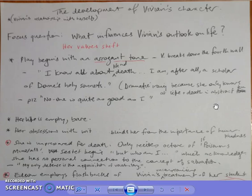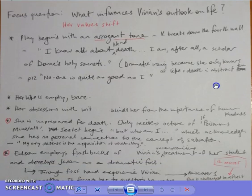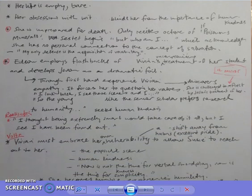The next point says that her life is empty and bare. Her name, Vivian Baring, has many meanings. There is a void in her life - her connection with emotion. She's bearing up to the pain. She's also lost her bearings. She's at a point where she doesn't truly understand how she fits in and what the purpose of her life has been. Her obsession with wit blinds her from the importance of human kindness. She's really only got half of what John Donne's poetry was all about, and that's the dramatic irony that is evident in the play.